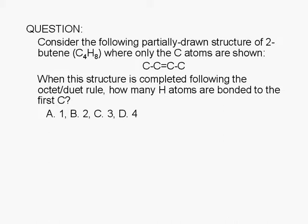Consider the following partially drawn structure of 2-butene, C4H8, where only the carbon atoms are shown. When this structure is completed following the octet-duet rule, how many hydrogen atoms are singly bonded to the carbon on the left? A1, B2, C3, or D4.